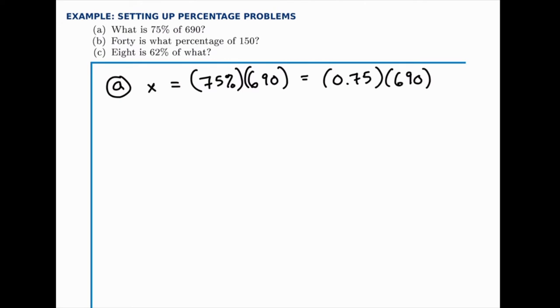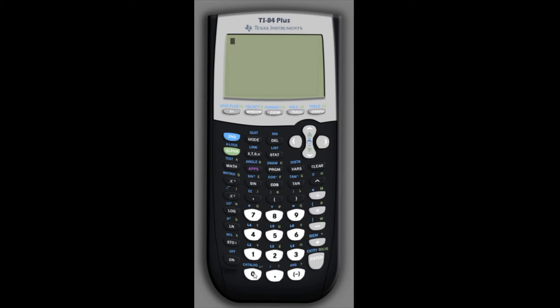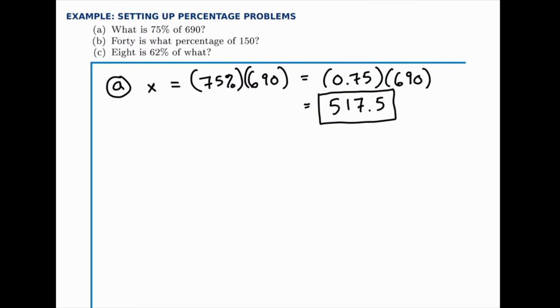Let's go over to the calculator and do that. So, we want 0.75 times 690. And we get the answer 517.5. So, the answer to Part A is that 517.5 is 75% of 690.